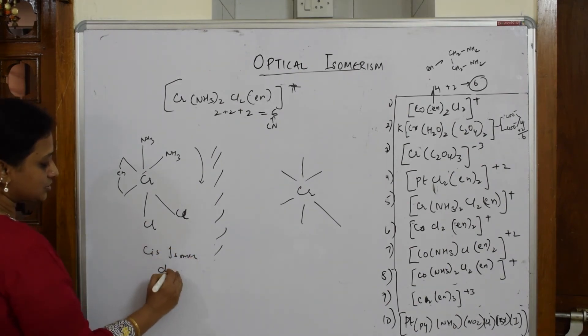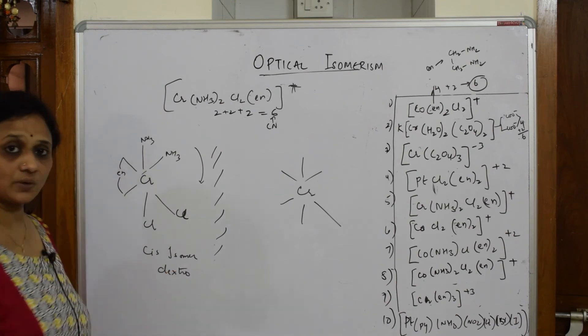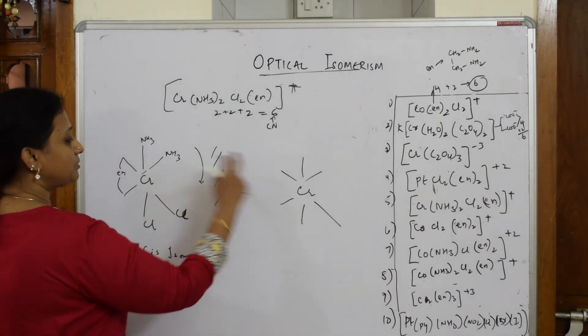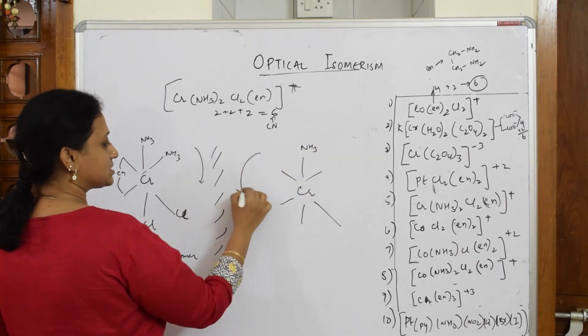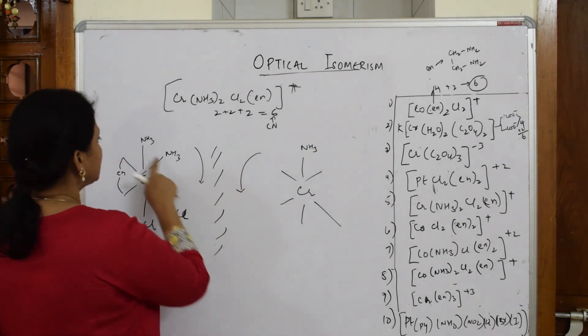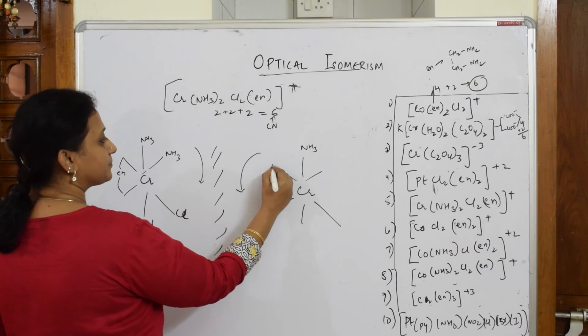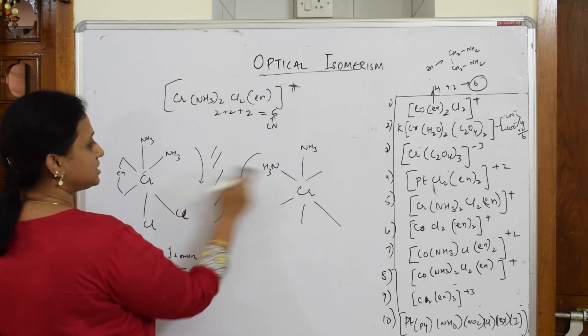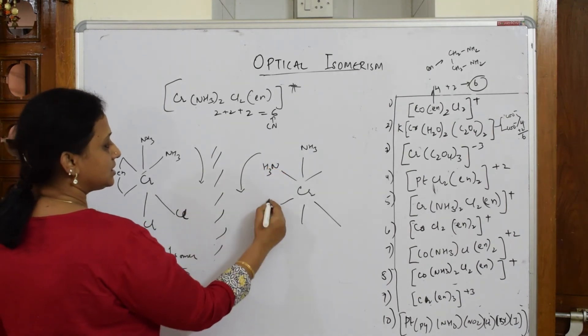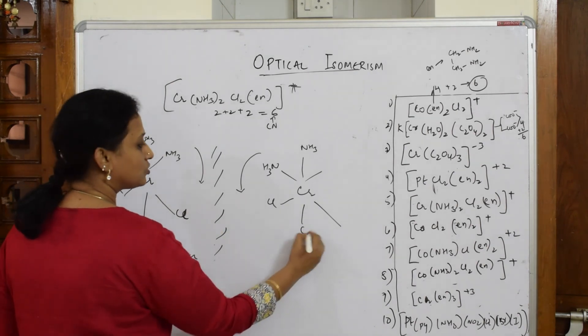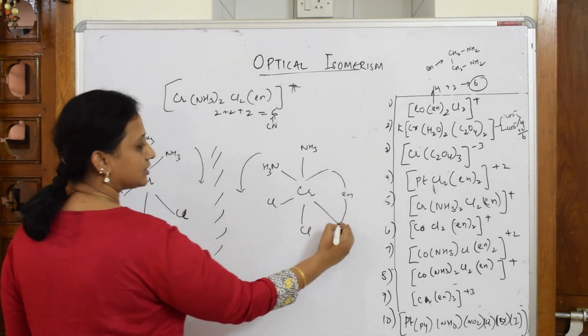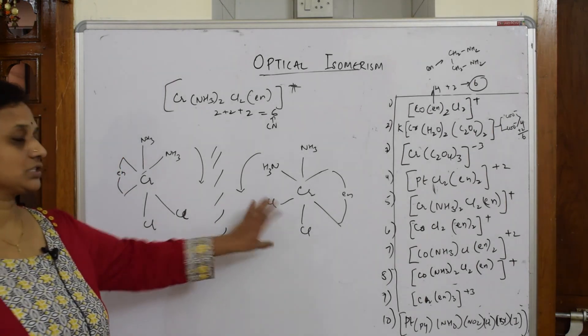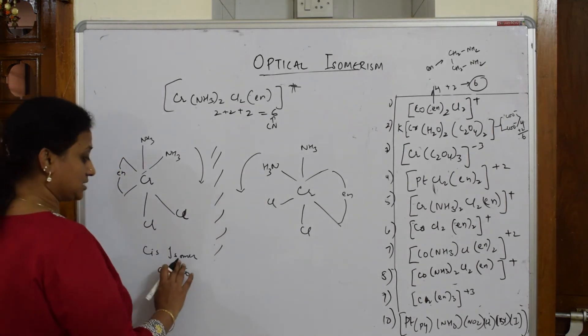The same mirror image, if I have to draw here, start from here. It is ammonia. This is levorotatory. Ammonia is here, NH3 is here. Cl is here, one more Cl is here, and your en is linking here. So these two are mirror images of each other. This is also cis isomer but this is levorotatory or anticlockwise direction.